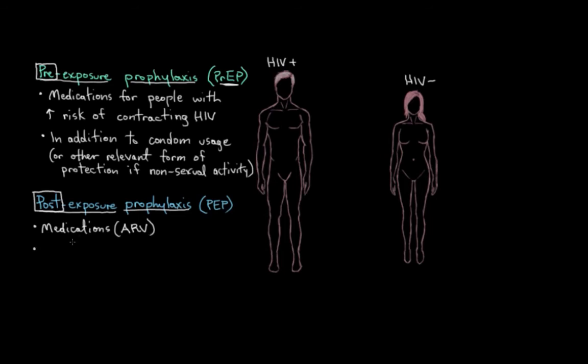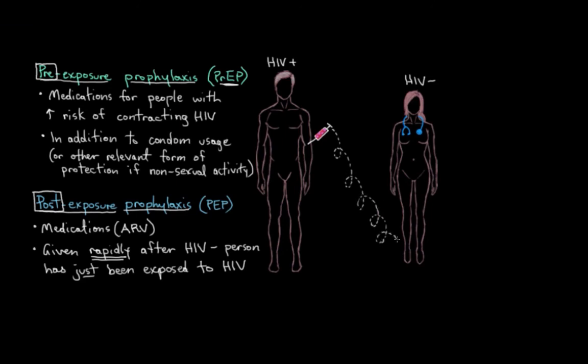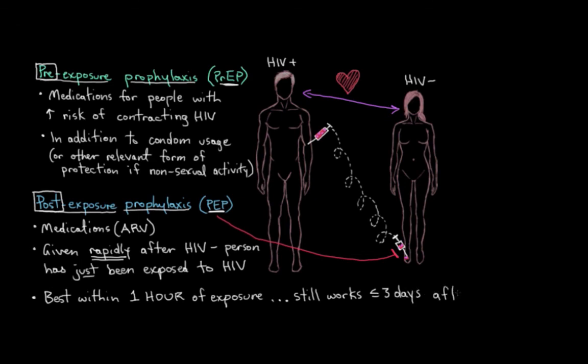And post-exposure prophylaxis, again, are ARVs that are to be given pretty quickly after an HIV negative person has just been exposed to HIV. So maybe it's a healthcare worker who is accidentally exposed to HIV through a needle stick injury, or maybe someone has had unprotected sex with an HIV positive person. So these two types of drugs are just ARVs that have a good chance of stopping any HIV that gets inside an uninfected person's body from causing an infection. And these PEPs work best if they're given within an hour of exposure, but they'll still work up to three days after an exposure.